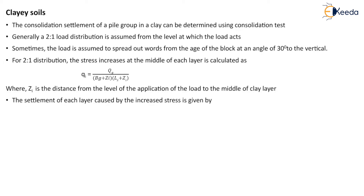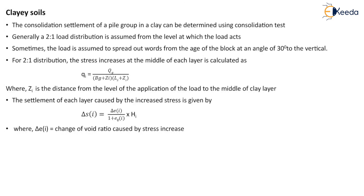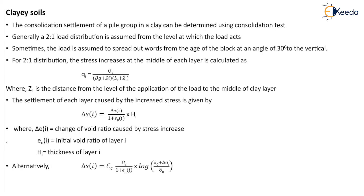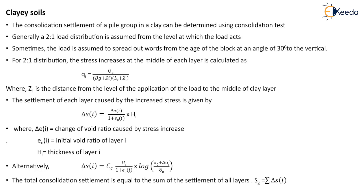The settlement of each layer caused by the increased stress is given by ΔSI = ΔEI / (1 + E0I) × HI, where ΔEI is the change of void ratio caused by stress increase, E0I is the initial void ratio of layer I, and HI is the thickness of layer I. Alternatively, ΔSI = CC × HI / (1 + E0I) × log((σ0_bar + Δσ_bar_I) / σ0_bar). The total consolidation settlement equals the sum of settlement of all layers: SIG = Σ ΔSI.